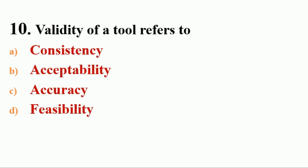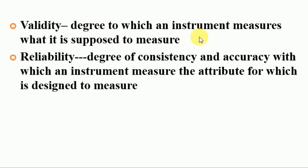Next question: validity of a tool refers to — options: A. consistency, B. acceptability, C. accuracy, D. feasibility. The answer is C, accuracy. Validity means the degree to which an instrument measures what it is supposed to measure — for example, a thermometer should measure only temperature. Reliability of a tool means it can only be considered reliable if it measures an attribute with similar results on repeated use.